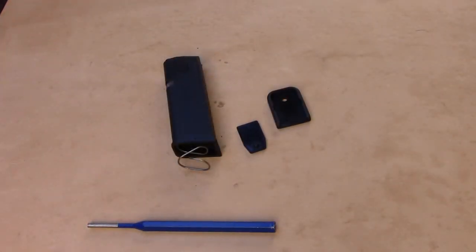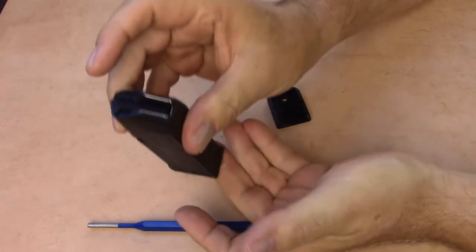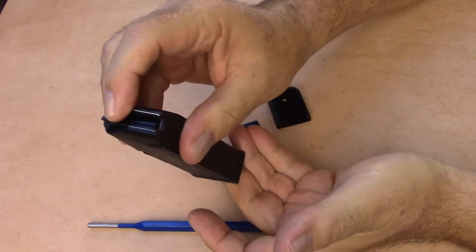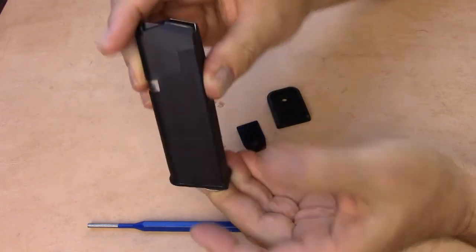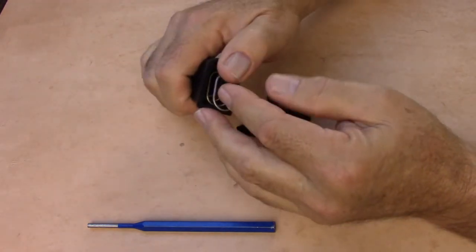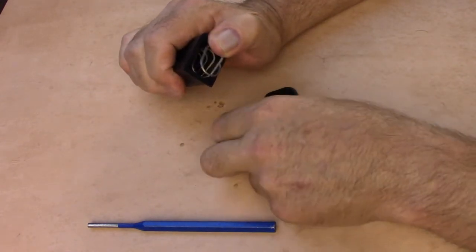Reassembly is, of course, the reverse of disassembly. Insert the spring and the follower. Make sure to orient the follower properly. Look at the top of the magazine to make sure that it is installed all the way to the top. If it doesn't, turn the follower and the spring around.